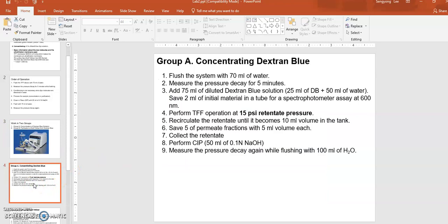For concentration operation: after washing the system with nanopure water and pressure decay observation, add 75 ml of dextran blue solution (25 ml stock dextran blue mixed with 50 ml nanopure water). Save about 2 ml as initial material for spectrophotometry assay at the end. Then add the rest (about 73 ml)